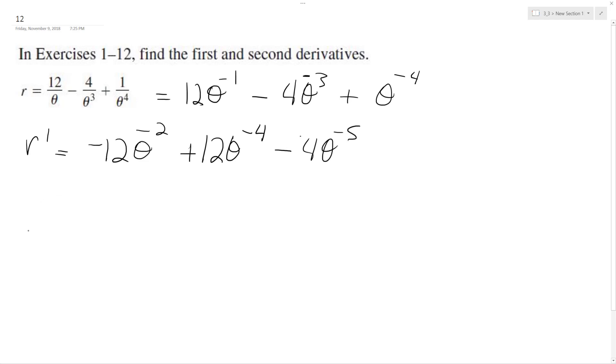You could rewrite this with the exponents on the bottom, but I'll just leave it like that. So r'' is going to be equal to positive 24 theta raised to the negative 3rd, minus 48 theta raised to the negative 5th, and positive 20 theta raised to the negative 6th.